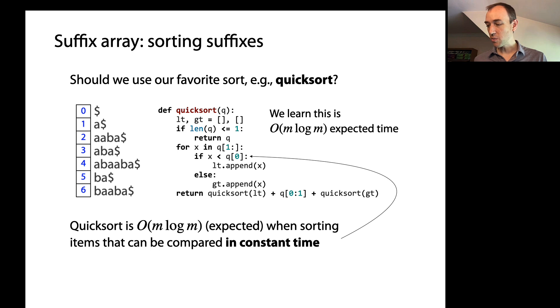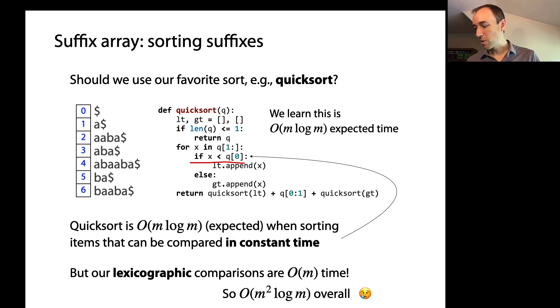And anytime we compare two strings, that means we're doing a lexicographic comparison, which means we're doing a loop that goes left to right across the characters of the two strings. So when we take this into account, it turns out we have to multiply in another factor of m. And that's because at each iteration of QuickSort, we're comparing one of the suffixes to a pivot suffix. So we're comparing two suffixes that in the worst case have length m. So we're doing a big O of m comparison at each of the iterations. Therefore, we have to multiply in another factor of m into the big O.